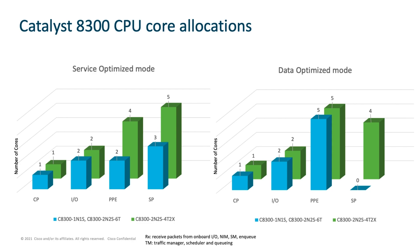The C8300-2N2S-42X, defined in the green blocks, is a much more powerful platform with 12 CPU cores in total: one for control plane, two for I/O operations, four for the packet processing engine, and five cores for the service plane. The key takeaway is that the default core allocation is designed for service optimization. With data optimized mode you may get better throughput, but you will not be able to run any container applications on eight-core platforms. On a 12-core platform, you can still run container applications as you have four cores available for services even in data plane mode.